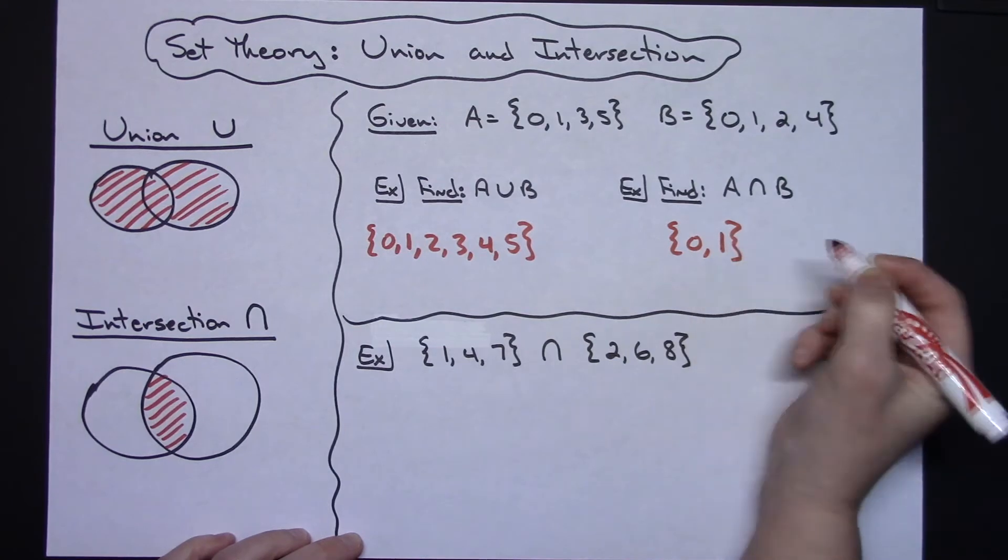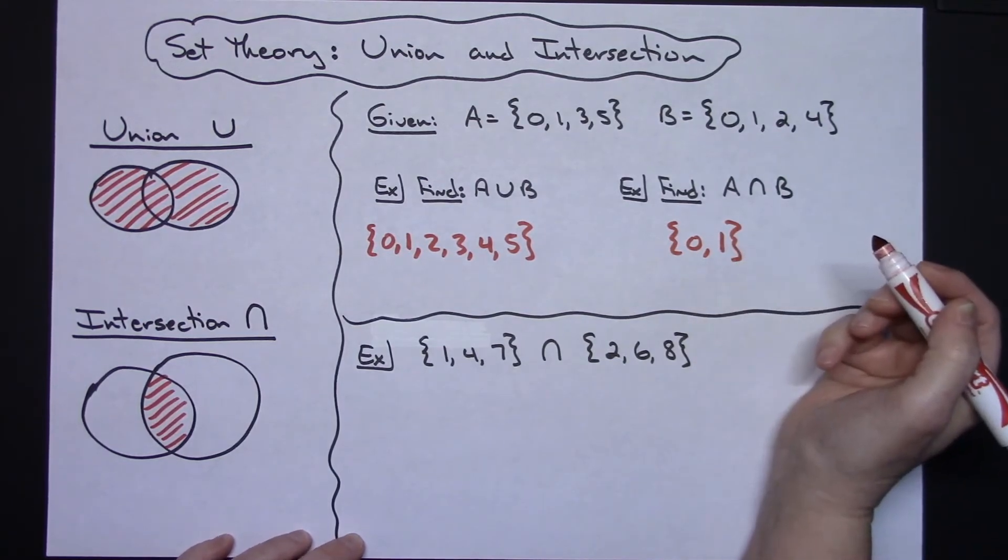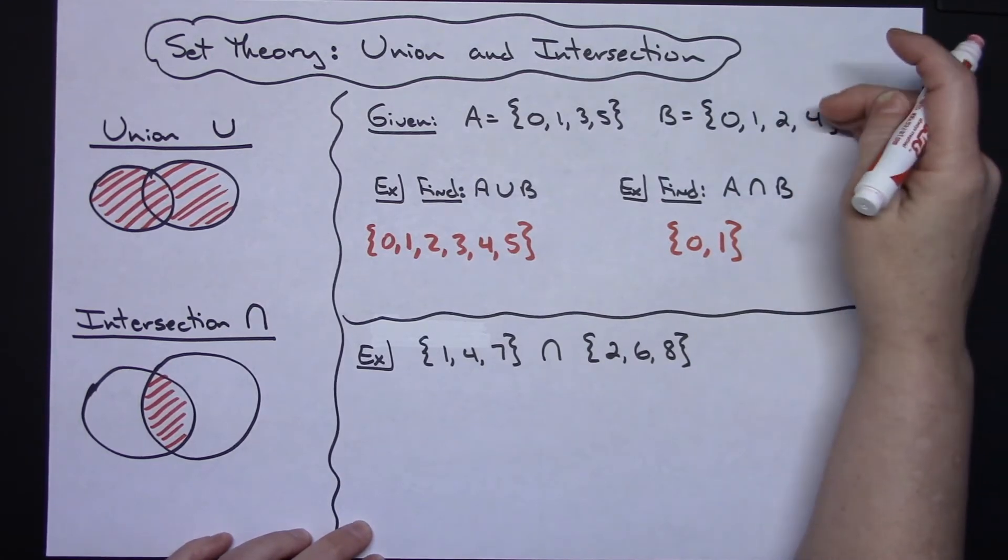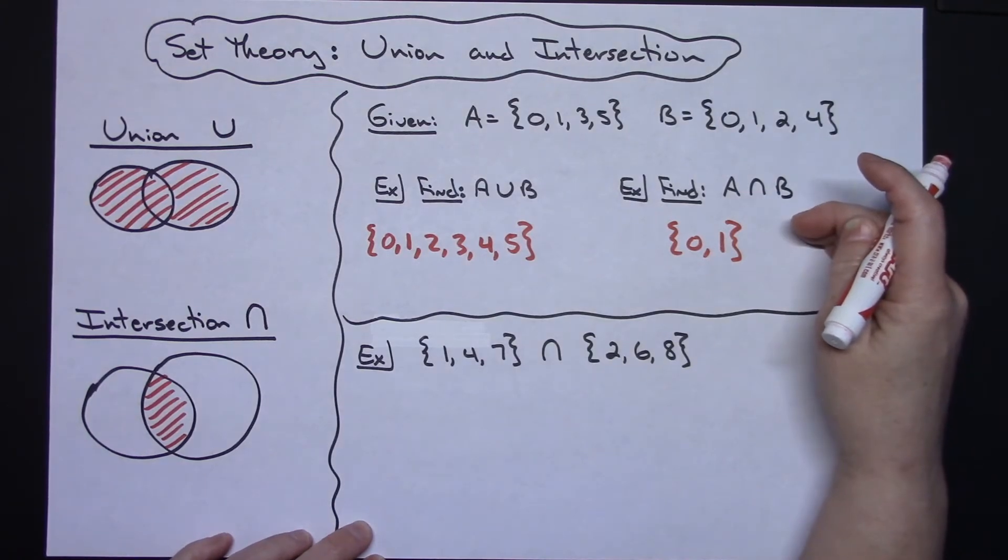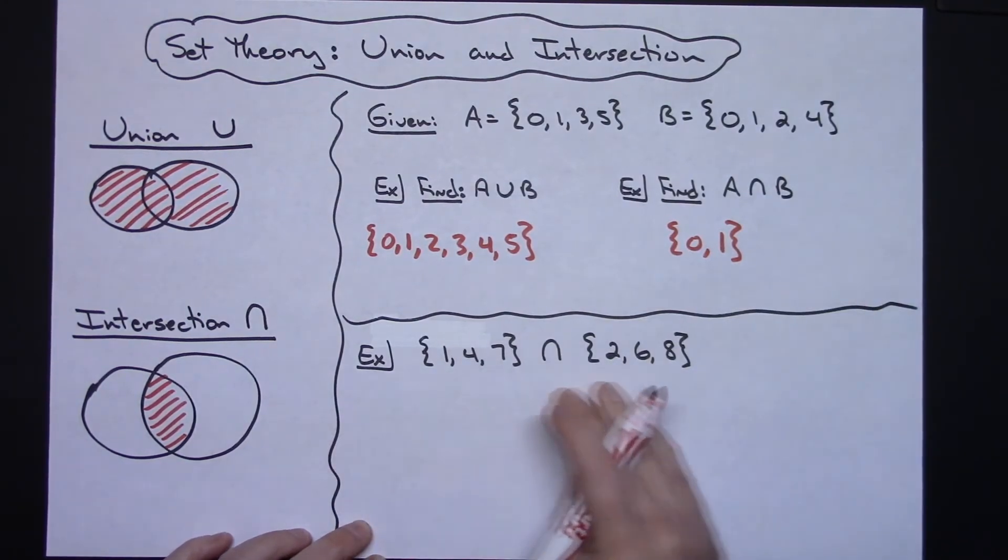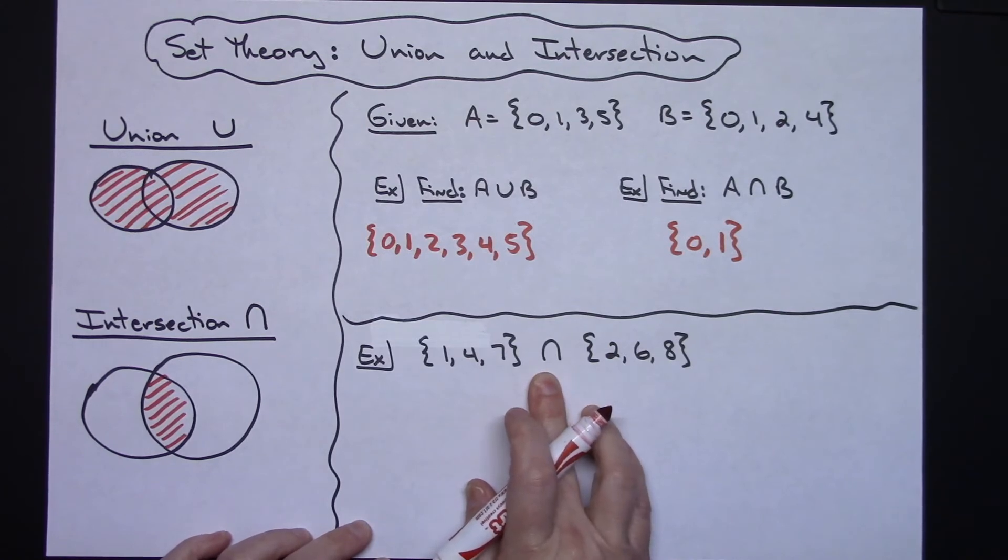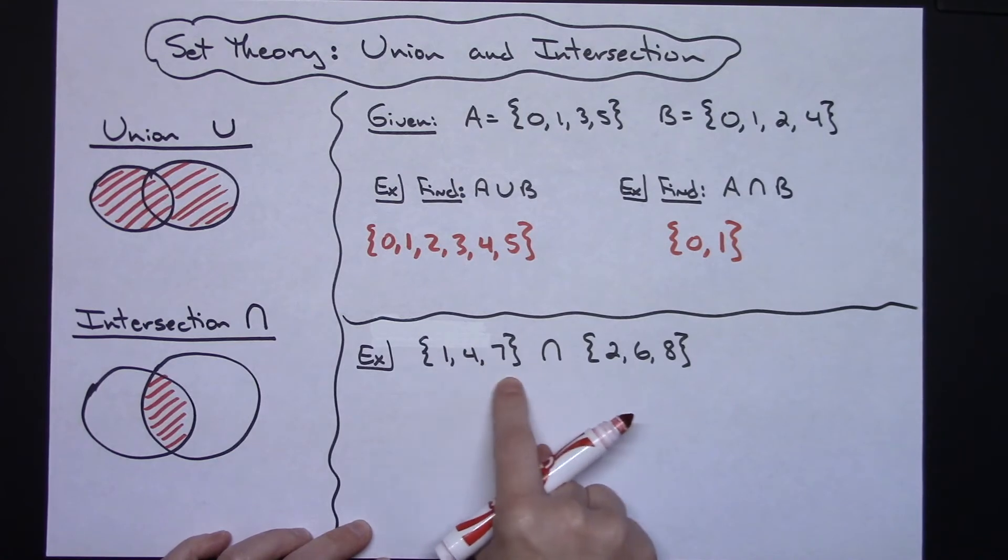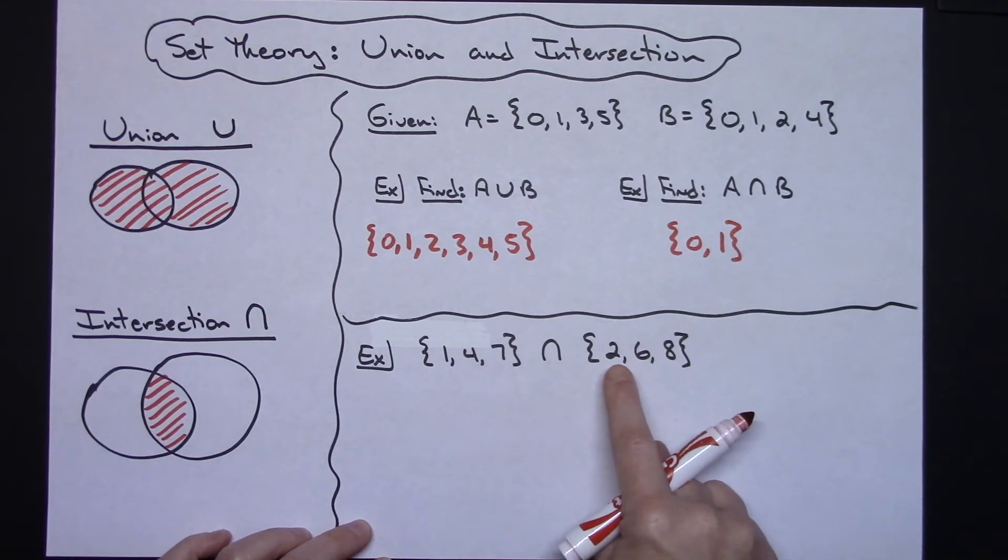Now showing problems and examples like this, they can give you defined initial sets and then ask you to find the intersection or the union. Or in this third example, they don't have to define them as 'this is set A and this is set B.' They can write a problem out like this using either an intersection or a union symbol in the middle and just putting both sets on both sides. So this one would be: I would be taking the set {1, 4, 7} and I would be intersecting that with the set {2, 6, 8}.